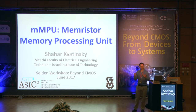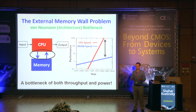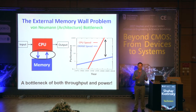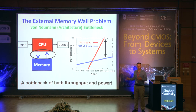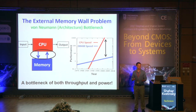But before that, I want to go back to the von Neumann structure. We know that there is a big problem in the von Neumann structure — the von Neumann bottleneck — which is basically the need to move data between the CPU and the memory. This is a huge problem in terms of performance, because going off-chip it is at least 200 clock cycles as compared to the CPU frequency.